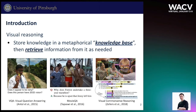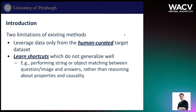To answer the question that the person does not have 20-20 vision, we need to understand that he wears glasses. We use a kind of knowledge to help our understanding. Similarly, models store knowledge in a knowledge base, then retrieve information from it as needed.